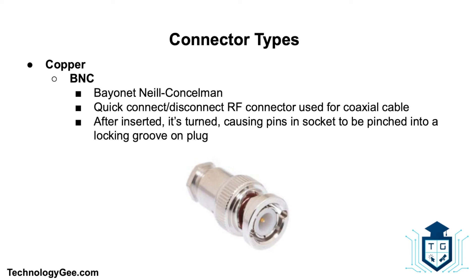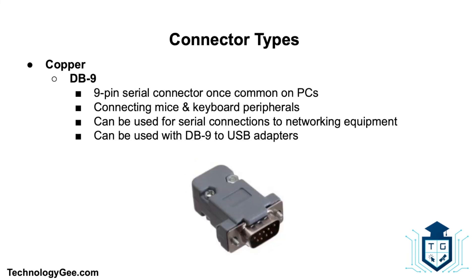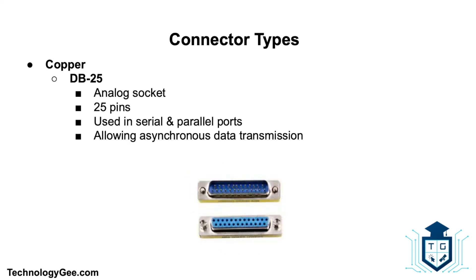The BNC connector, or Bayonet Neill-Concelman connector, is a miniature quick-connect/disconnect radio frequency connector used for coaxial cable. After insertion it is turned, causing pins in the socket to lock into a groove on the plug. The DB9 connector is a nine-pin serial connector once common on PCs, used for connecting peripherals like mice and keyboards, for serial communications to networking equipment, and can be used with DB9-to-USB adapters for modern PCs.